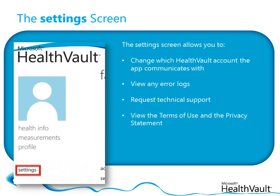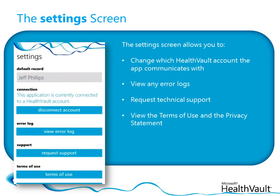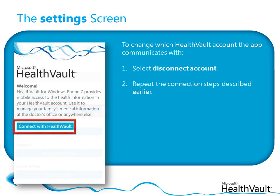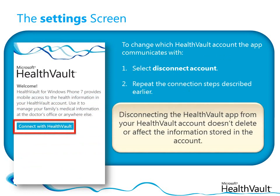Finally, the Settings screen allows you to change which HealthVault account the app communicates with, view any error logs, request technical support, and view the terms of use and the privacy statement. If you want to use the HealthVault app with a different HealthVault account than the one it's currently connected with, on the Settings screen, select Disconnect Account. You can then repeat the connection steps shown earlier to reconnect to a different HealthVault account. Disconnecting the HealthVault app from your HealthVault account doesn't delete or affect the information in the account — it just severs the connection between the account and the app.